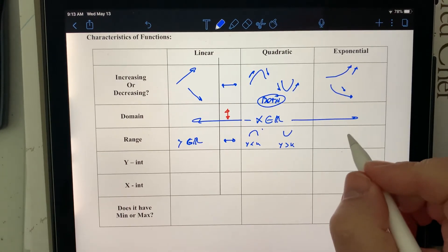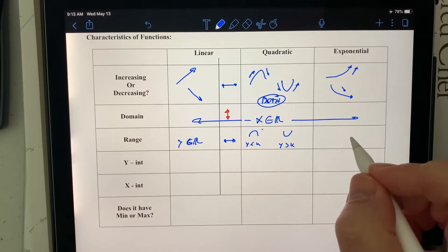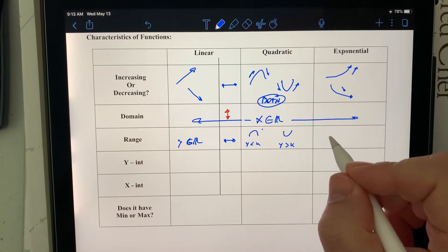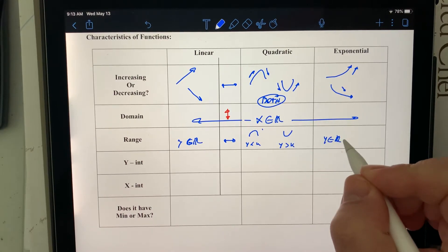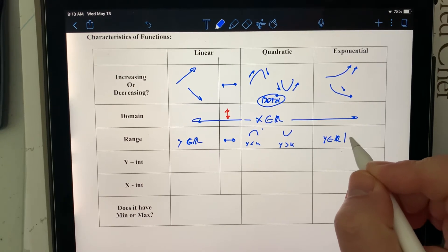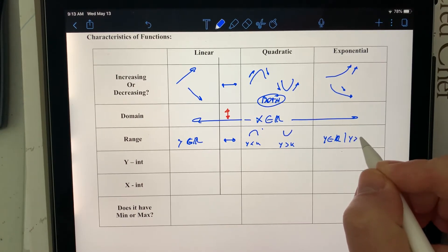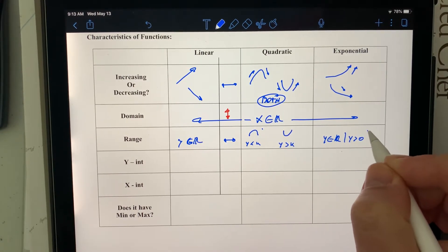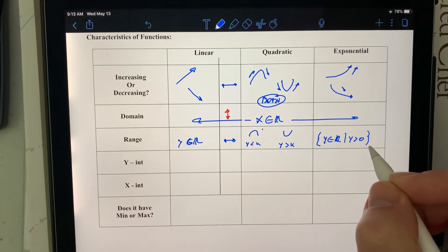And for the exponential functions, at least for the basic ones, they're always above zero. So we're going to say that y belongs to the real numbers such that y is greater than zero, not equal to zero because it never reaches.